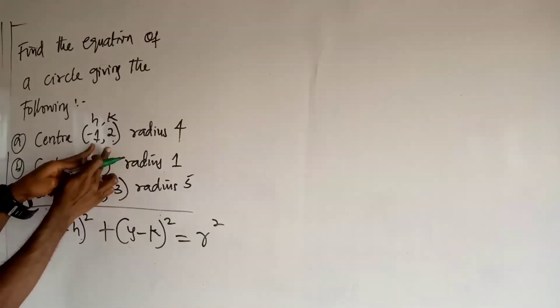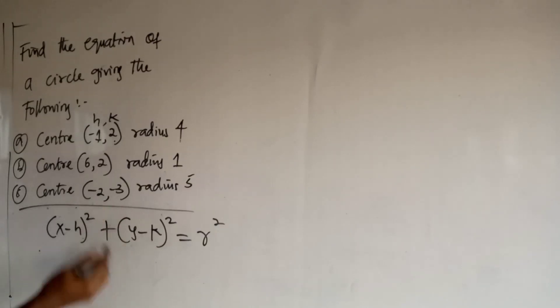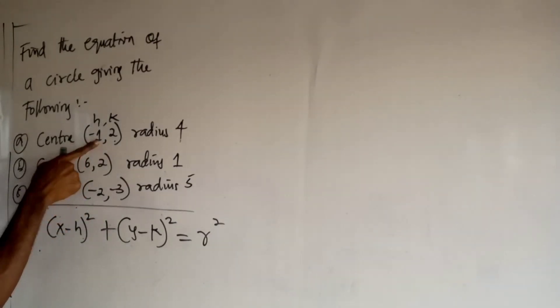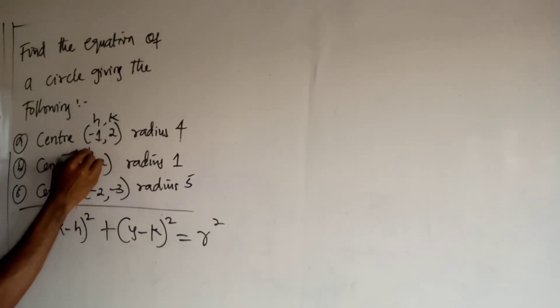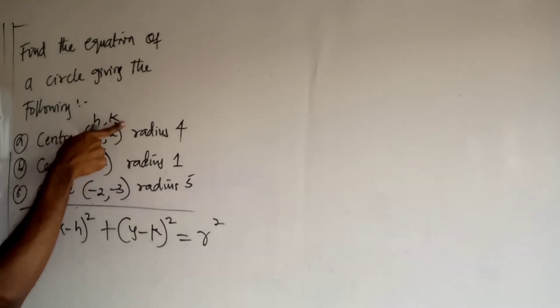So in this case, we have the center and we have the radius. So there's no problem, we are going to go with solving it. At this point, you can see that the h here is minus 1 and the k is 2. So this is how we put up the coordinates. The first coordinate is the h and the second is the k.